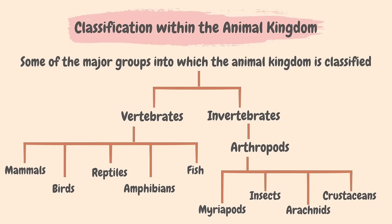Vertebrates are animals that have a backbone. The first group, mammals, may be very familiar since we humans also belong to this group. Some characteristics of mammals are: they have fur or hair; young feed on milk from mammary glands; their heart has four chambers; and they have different types of teeth — incisors, canines, premolars and molars. Cats and elephants are examples of mammals.